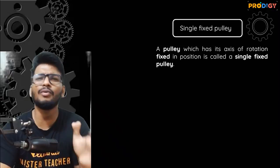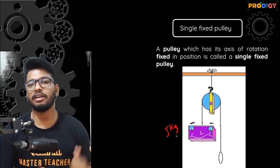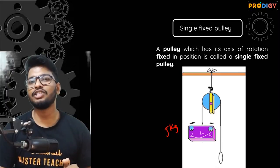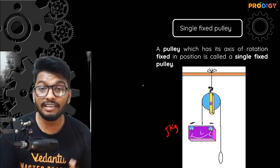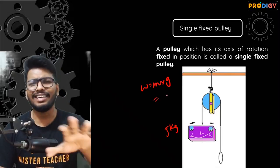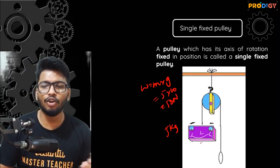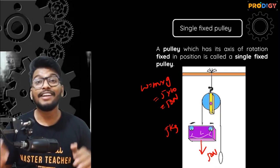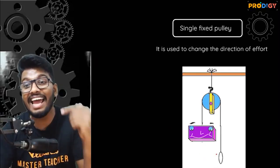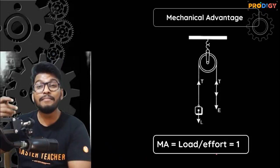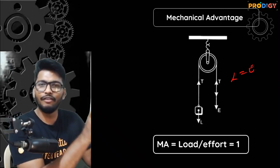To talk about the mechanical advantage of a single fixed pulley: if we have a load of 5 kg, its weight is mass times g, so 5 × 10 = 50 N. The thing about a single fixed pulley is that if you have a load of 50 N you have to apply an effort of 50 N as well. Whatever is the load, your effort will also be equal to it.